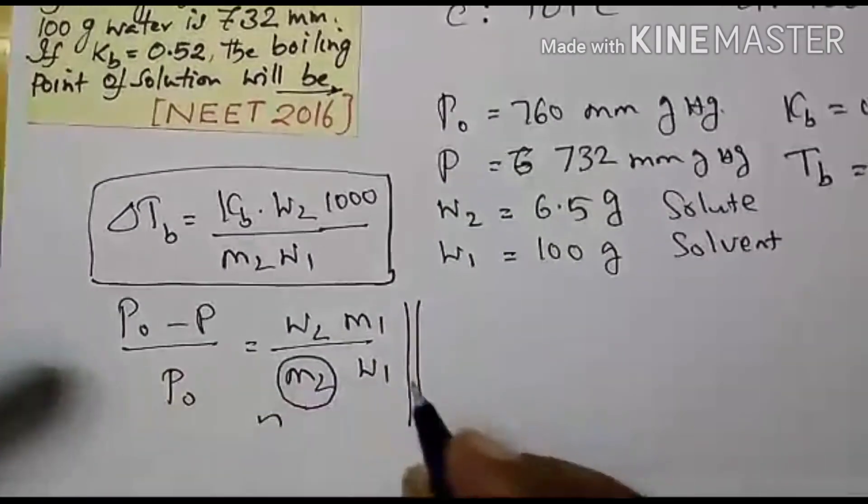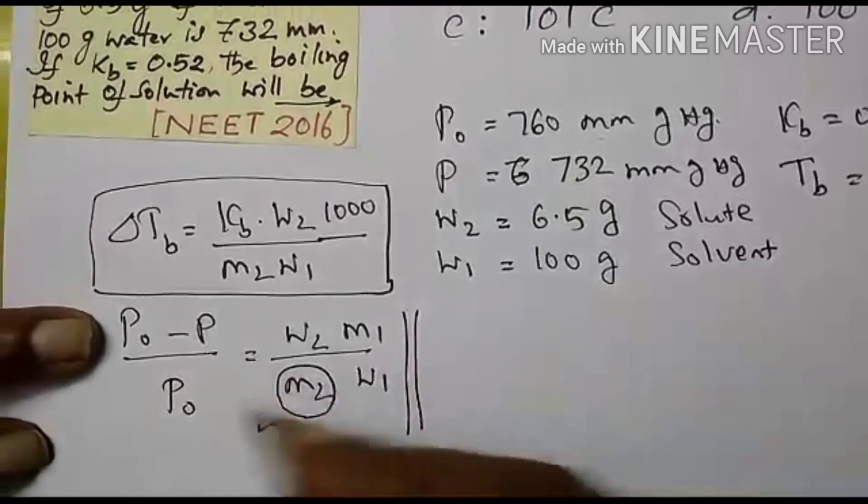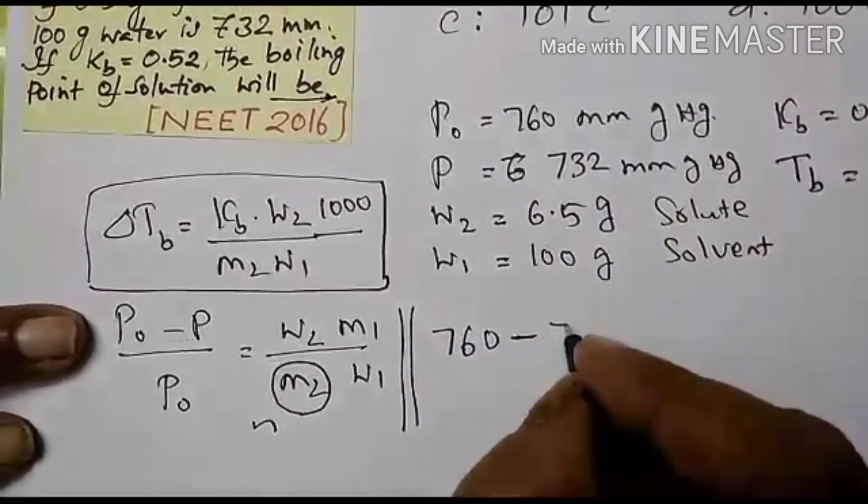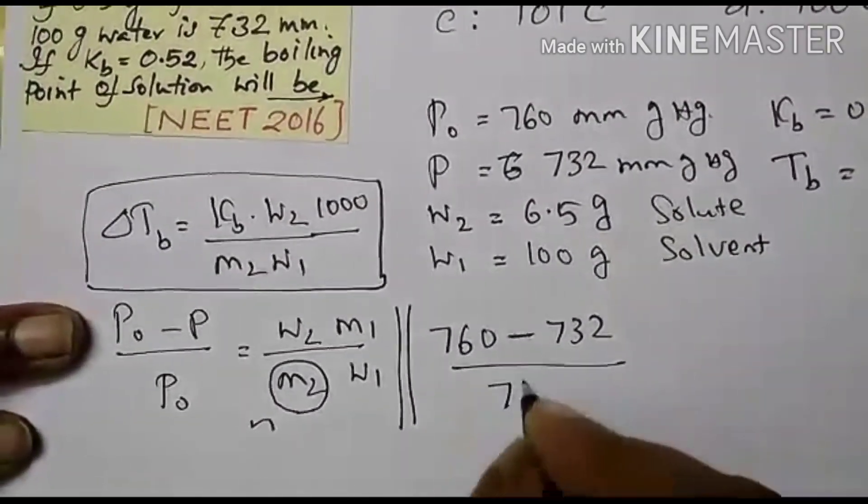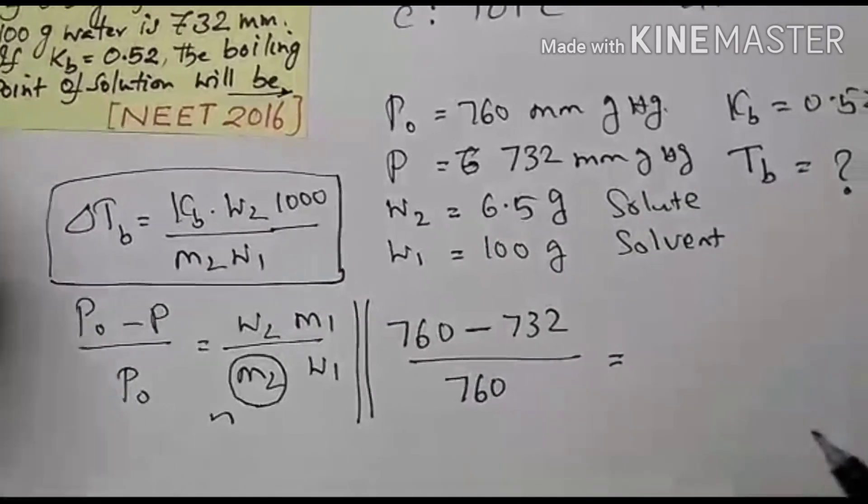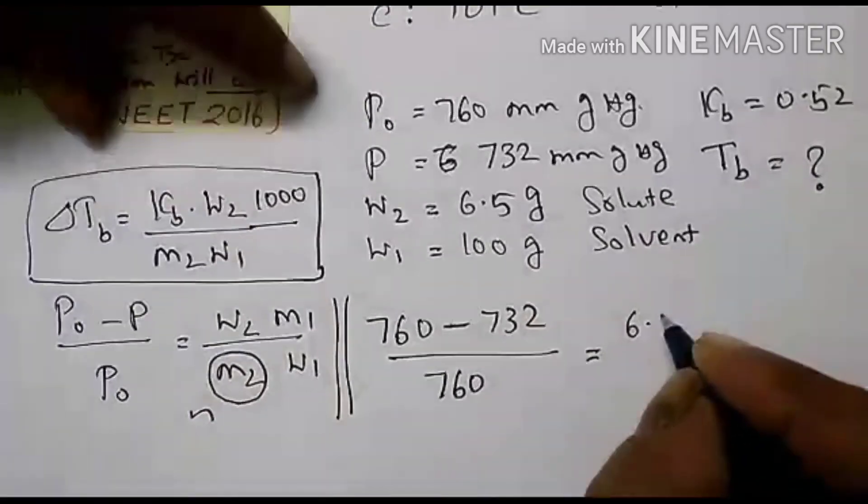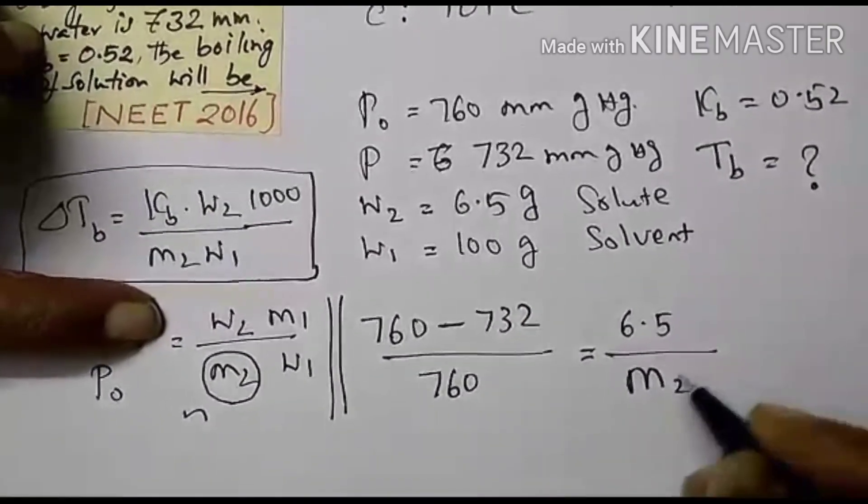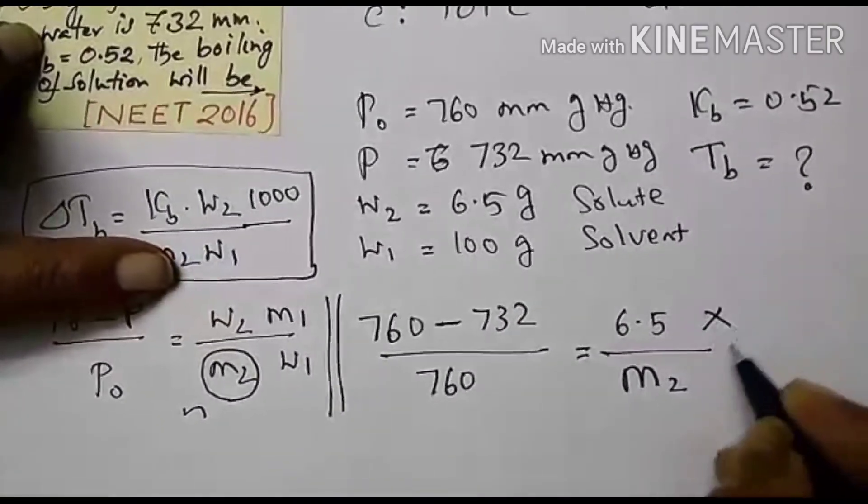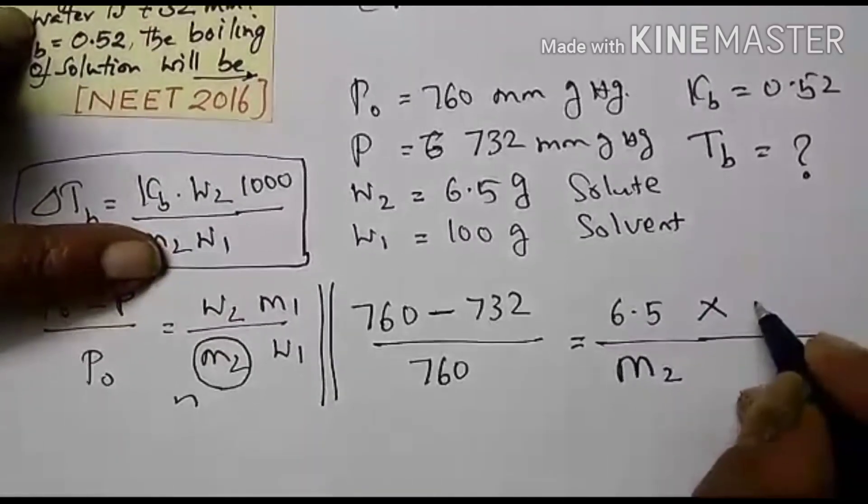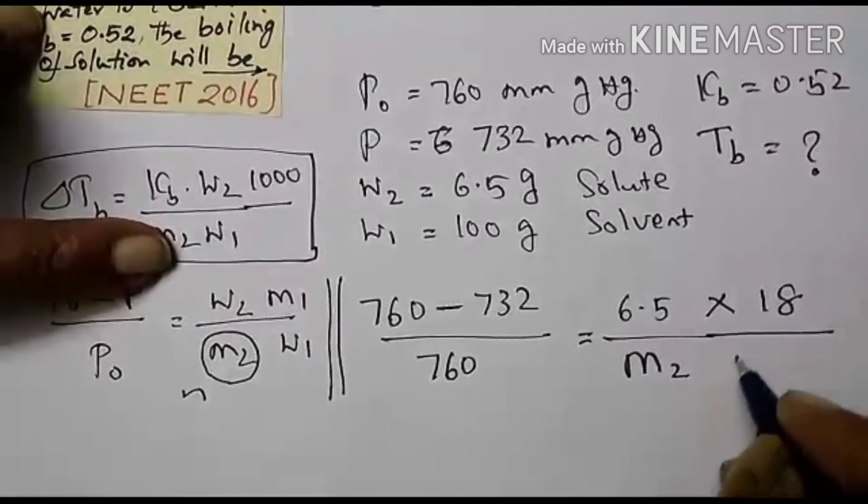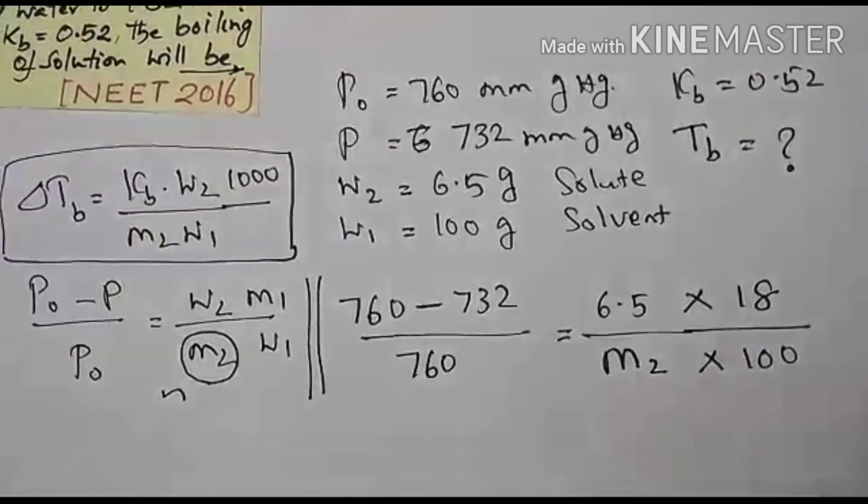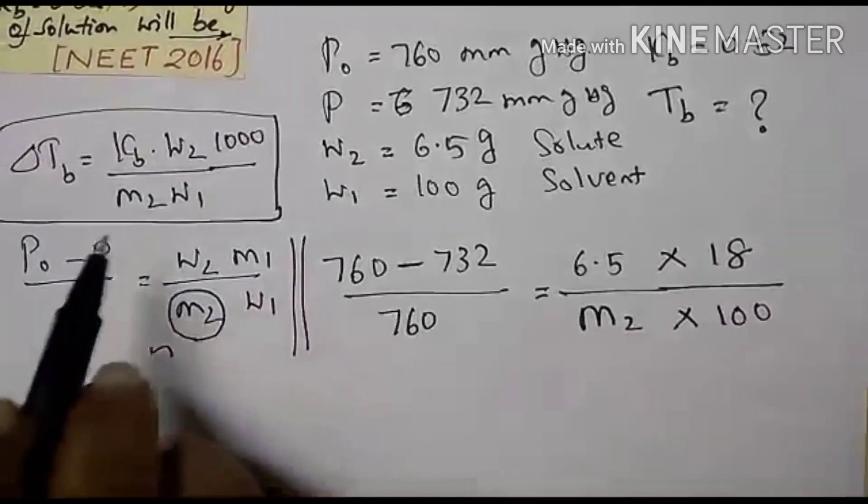M2 is P0 minus P by P0 is equal to W2 by M2 M1 W1. By using this formula, we can calculate the M2 then substitute the M2 here. So this is our approach. Now let us write this one. For this I am going. What is P0 is anything. That is the standard now. Here 760 mmHg minus 732 divided by 760 is equal to W2 is here. Everything is substitute the values 6.5. Then here M2 is the question. You write M2. Then M1. M1 is the solvent. Molecular mass of solvent is water 18 into weight of solvent is 100 gram.